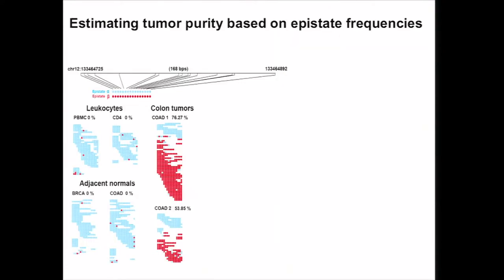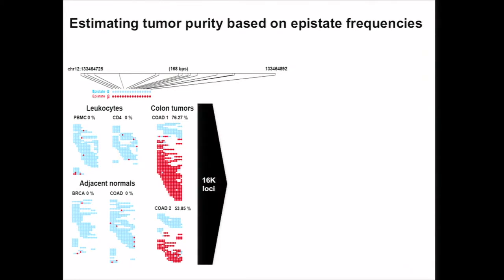First, I want to present how we use epistate frequency to estimate tumor purity. Here is one cancer-specific locus of 170 base pairs with about 70 CpGs. We infer two epistates — the unmethylated and methylated epistate — and found no methylated epistate in both leukocytes and adjacent normals. When we look at two colon tumors, the methylated epistate appears in the first colon tumor at 76%, whereas the second one has 30%. In the whole genome, there are about 16,000 such loci.